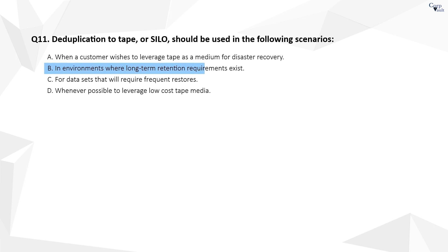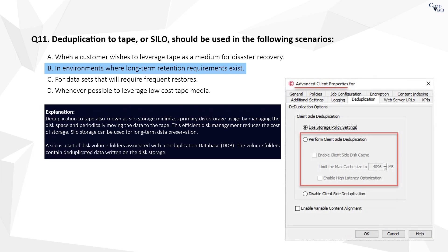The correct answer is B. Silo storage minimises primary disk storage usage by managing the disk space and periodically moving the data to tape. This efficient disk management reduces the cost of storage. Silo storage can be used for long-term data preservation.